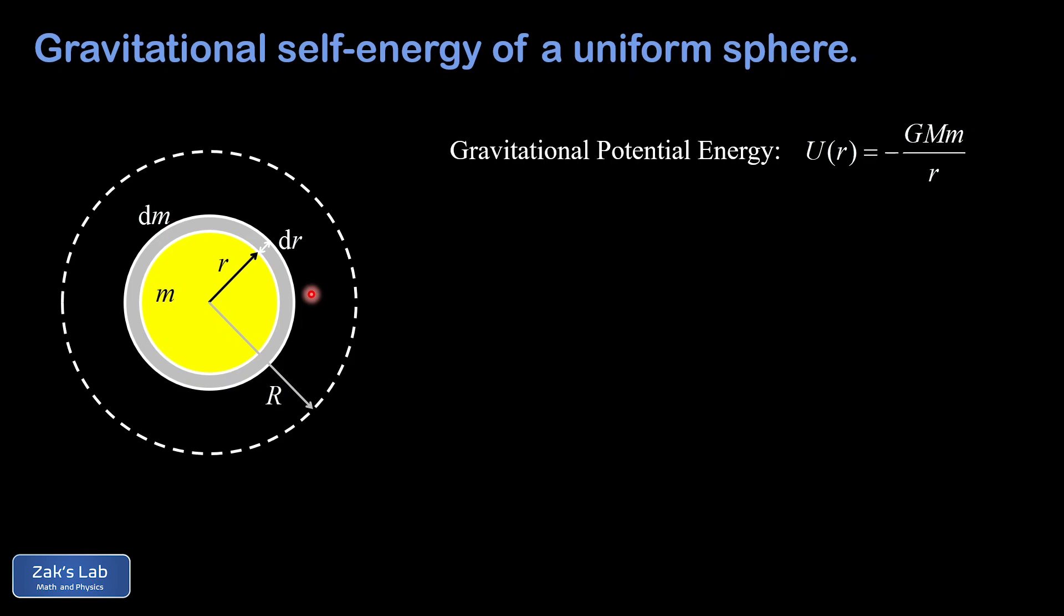Now one more thing before we grind through the derivation here. We need a quick reminder about the concept of density. Density is mass per unit volume, measured in kilograms per cubic meter, and we normally give that the Greek letter rho. We also frequently turn around this relationship to say that mass is density times volume. We're going to use both of these formulas several times throughout the derivation.